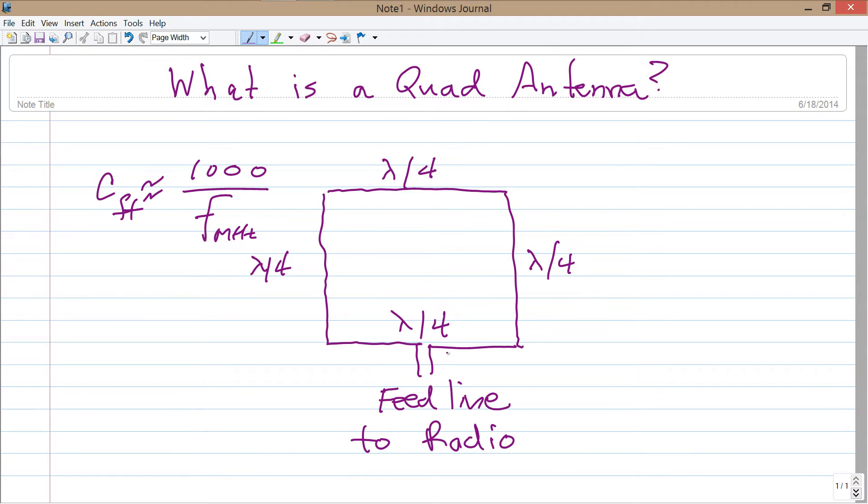That is what you will get when you want to resonate a full wavelength loop antenna at a particular frequency. And when you do that you will get a characteristic feed point impedance that is a pure resistance of approximately 100 ohms.